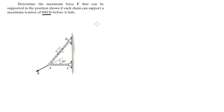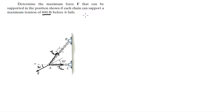Let me draw the free body diagram right here. We have tension B and tension C, and we know that this angle is 30 degrees and this angle is also 30 degrees.